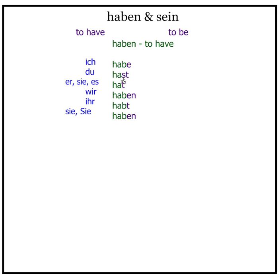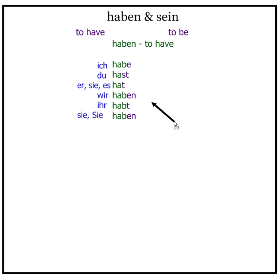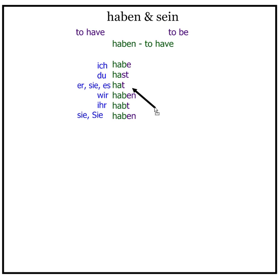Conjugation of the verb haben doesn't have a stem vowel change, but look what it does have: ich habe, du hast, er/sie/es hat. Wir haben, ihr habt, sie/Sie haben. It starts out with stem plus ending for ich. In the conjugation to du, it loses the 'b' in the stem — it's simply du hast. It doesn't come back in the conjugation for er, sie, es — er hat. Notice that er has the full stem H-A-B, but the ending is just '-t', giving er hat.